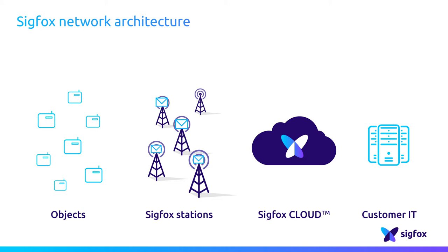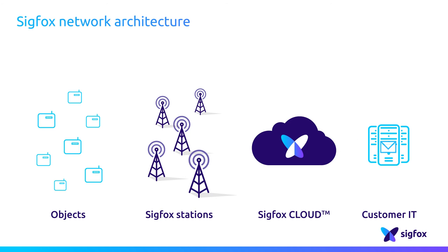Every single base station deployed around the world by Sigfox network operators is directly connected to the Sigfox cloud thanks to a point-to-point link. Those base stations detect, demodulate and report the messages to the one and only Sigfox cloud. The Sigfox cloud then pushes the messages to many customer servers and IT platforms.